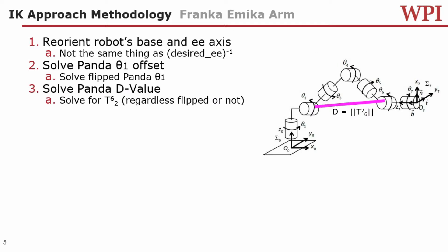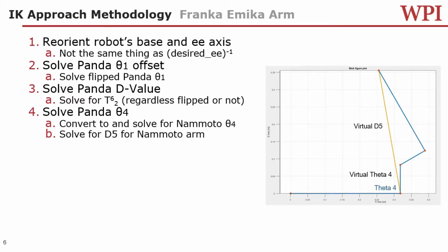Now we can solve for the D value, which is the distance from the end of T0-to-2 to the wrist center. Once we have this value, we can then solve for theta 4. Now that we have solved for theta 4, we have to solve for the rest of the arm. The problem is that our current IK methodology requires that we not have an offset at theta 4. Therefore, we have to create a function that converts the real Panda's theta 4 to a virtual theta 4. This also means that our D5 and the DH parameters must be converted to a virtual D5 to account for this new virtual theta 4 and this robot arm without an offset.